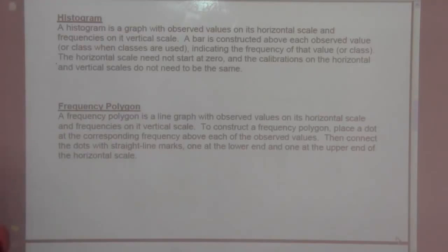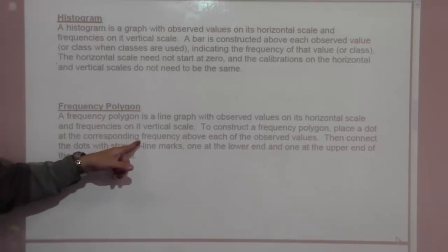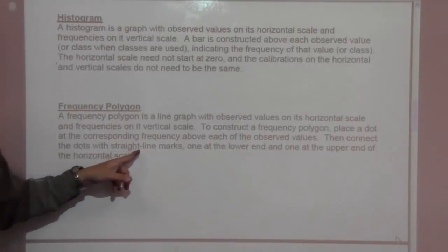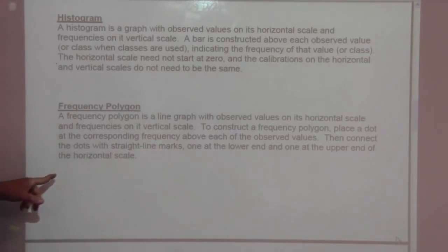To construct a frequency polygon, place a dot at the corresponding frequency above each of the observed values, then connect the dots with straight line marks, one at the lower end and the upper end of the horizontal scale.